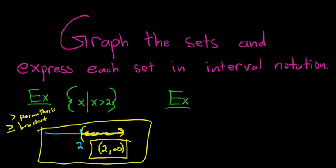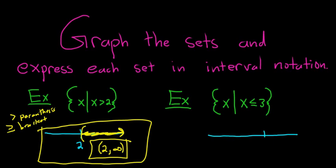Let's do another example. How about the set of all x such that x is less than or equal to 3? A little bit different. We'll start by drawing our number line, and then 3 is here. This time it's all the numbers less than or equal to 3, so we include the 3 because of the equal to part — we use a bracket.